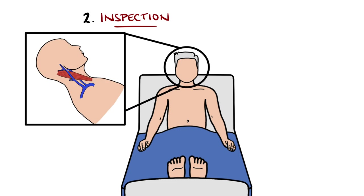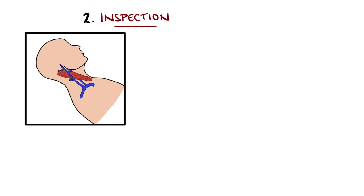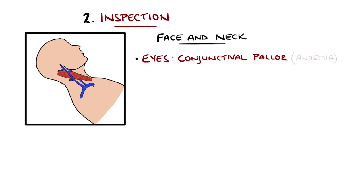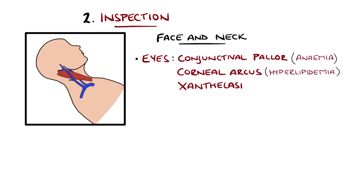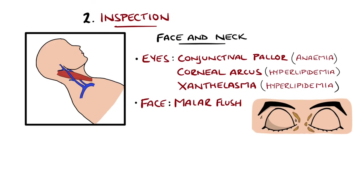Then we move to inspect more specific portions. An easy way to do this is moving from top to bottom, beginning with the face and the neck. The eyes may demonstrate conjunctival pallor that suggests anemia or poor perfusion. Hyperlipidemia may also be suggested by corneal arcus — white or grey rings in the periphery of the cornea formed by cholesterol deposits. Presence of xanthalasma, yellow plaques found periorbitally, also indicate hyperlipidemia. Malar flush is associated with mitral stenosis, and the mouth can be cyanosed, in particular underneath the tongue.